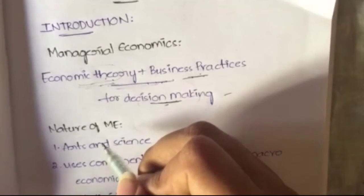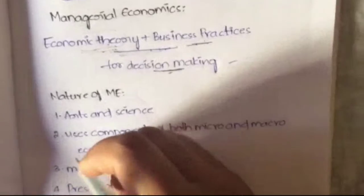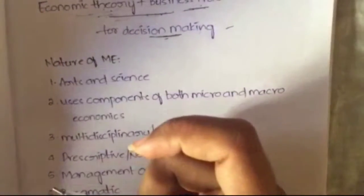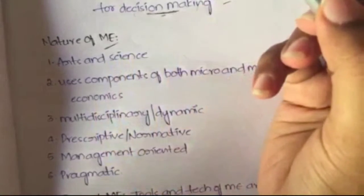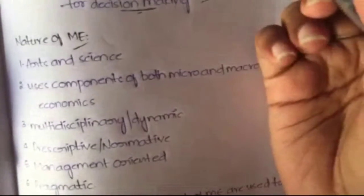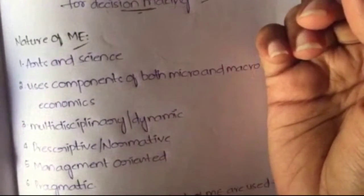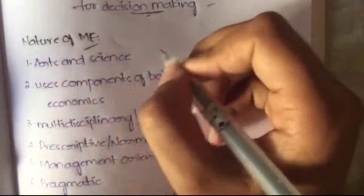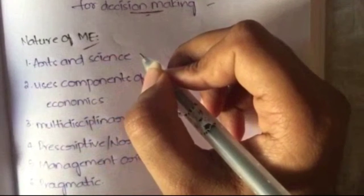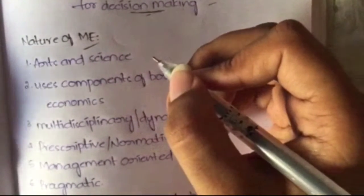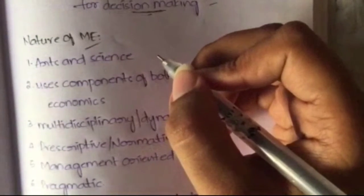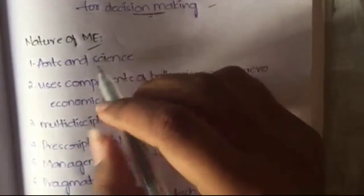Now let's move to the nature and scope of managerial economics. Every object or human being has some nature or characteristics, and managerial economics also has a nature. The first aspect is that it follows arts and science — meaning it requires a lot of logical thinking and also creativity skills.